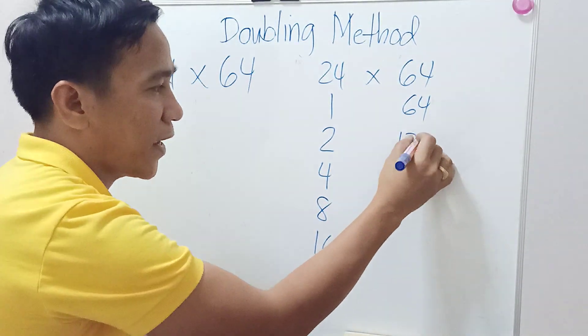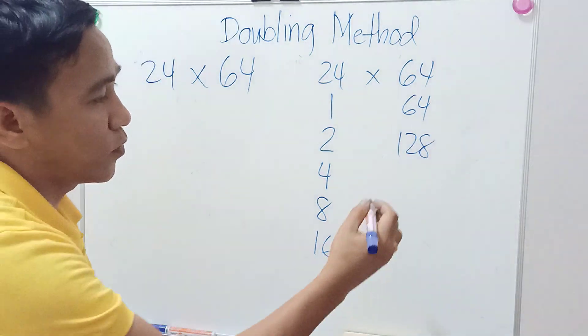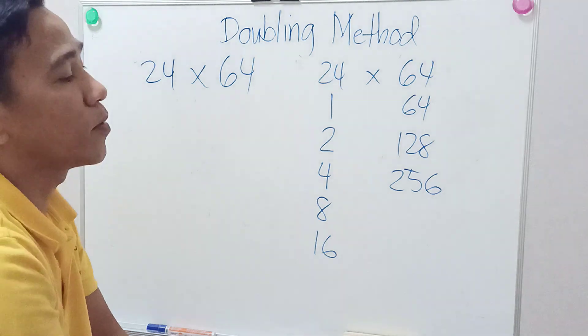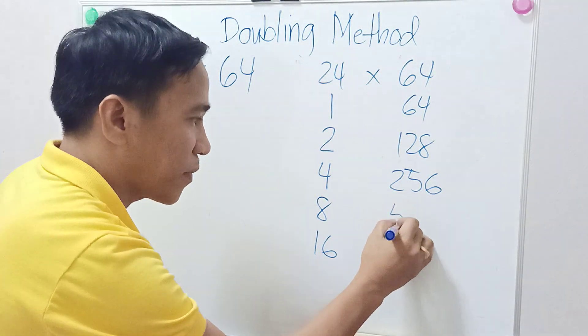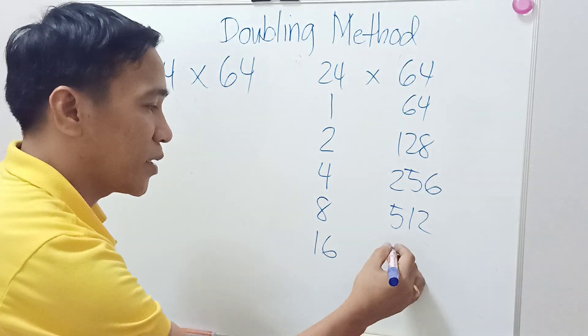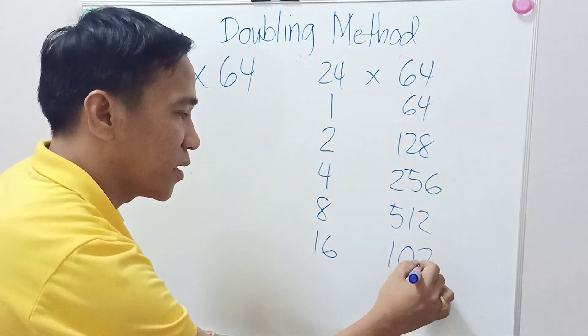Then 64, double is 128, double of 128 is 256, double of 256 is 512, and double of 512 is 1024.